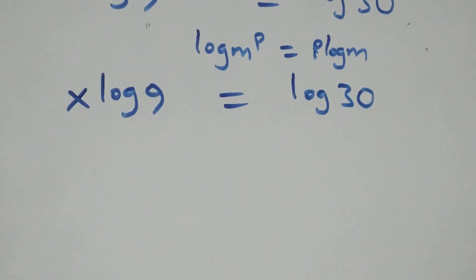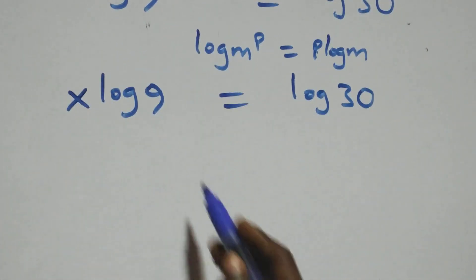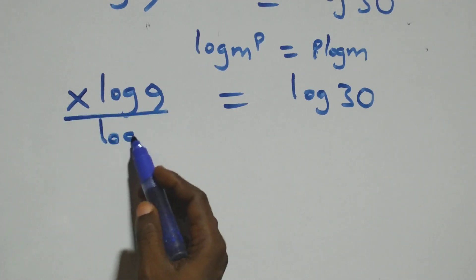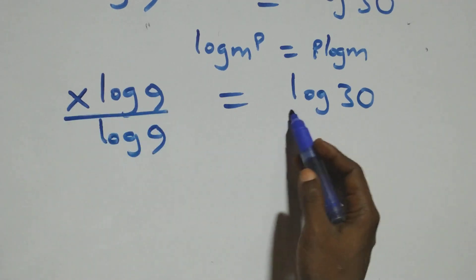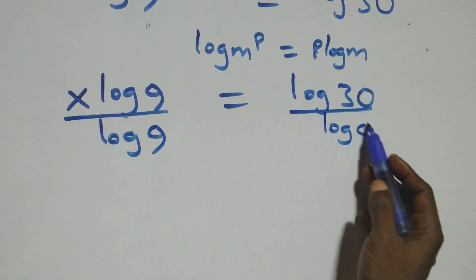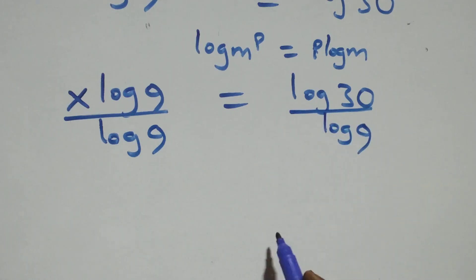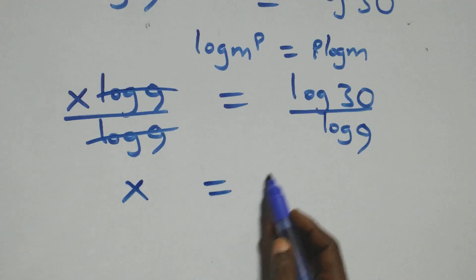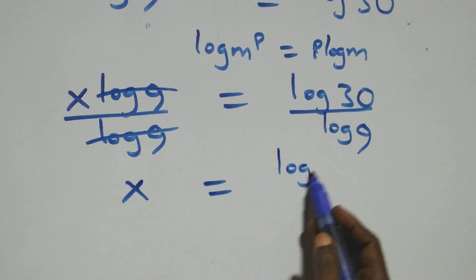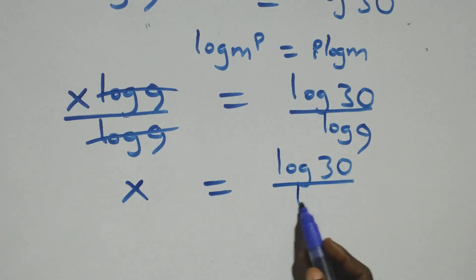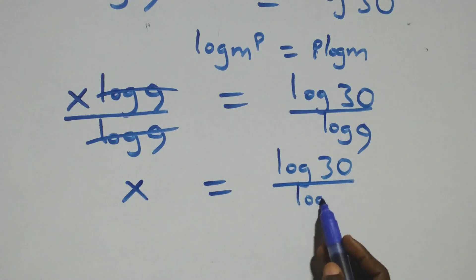The next step is to divide both sides by log 9. We divide this side by log 9 and also divide this side by log 9. The log 9 terms cancel each other, and we have x equals log 30 over log 9.